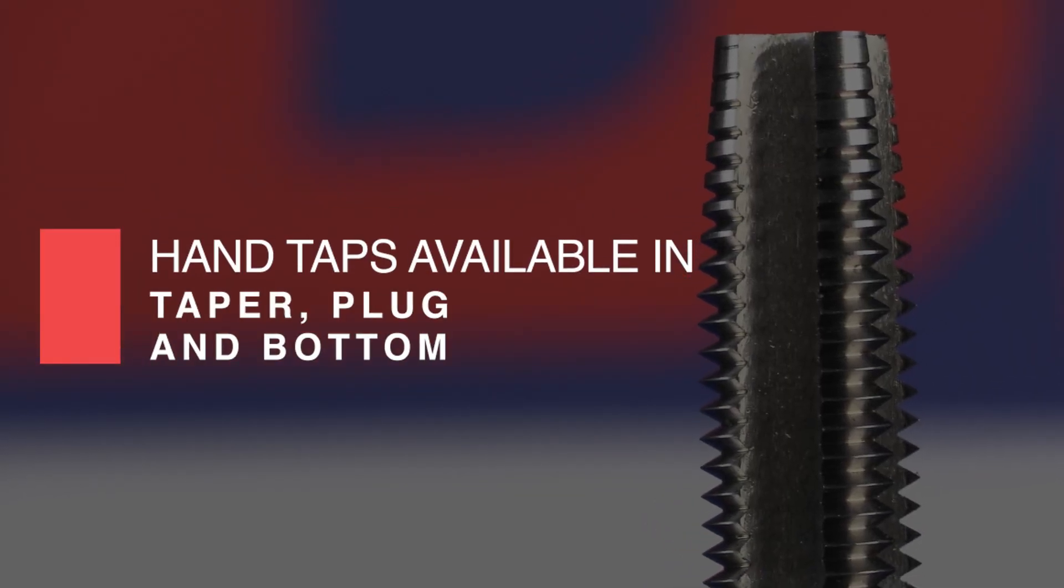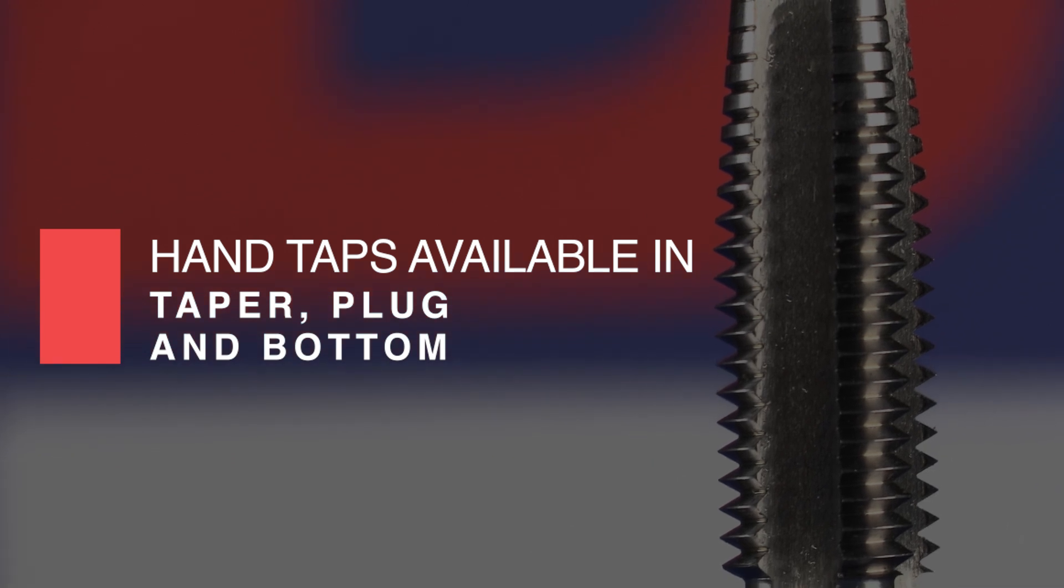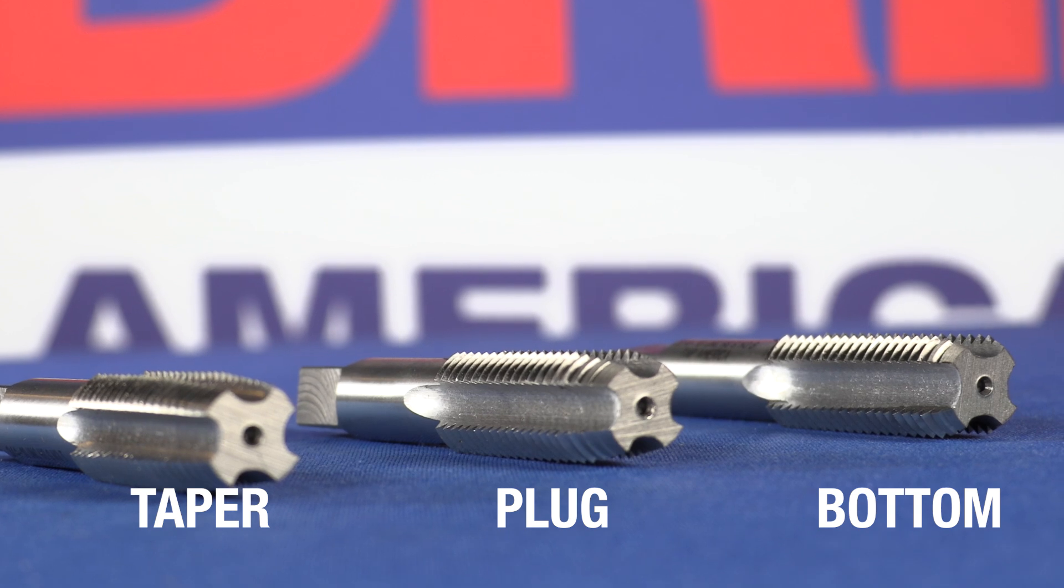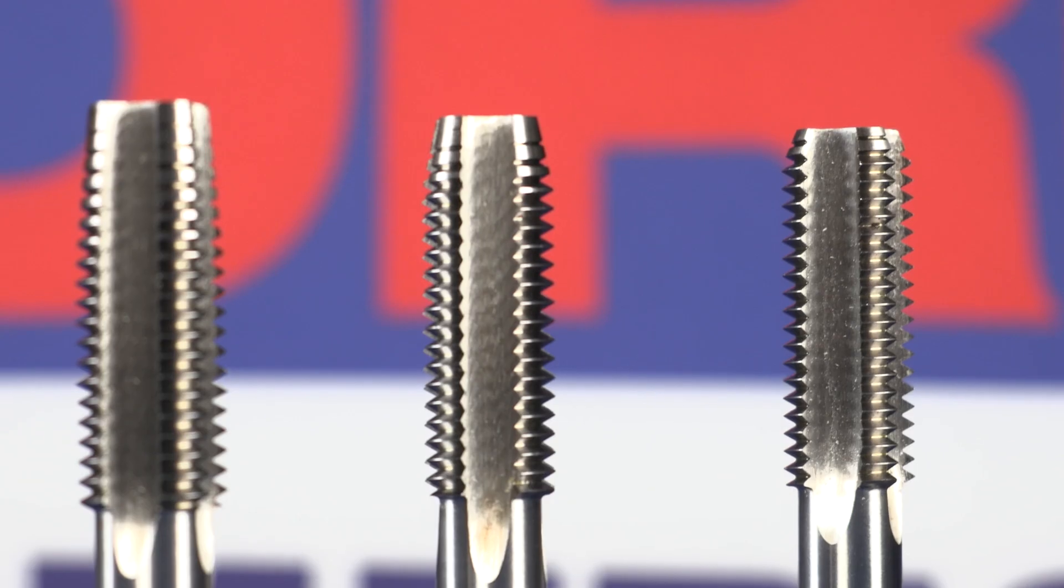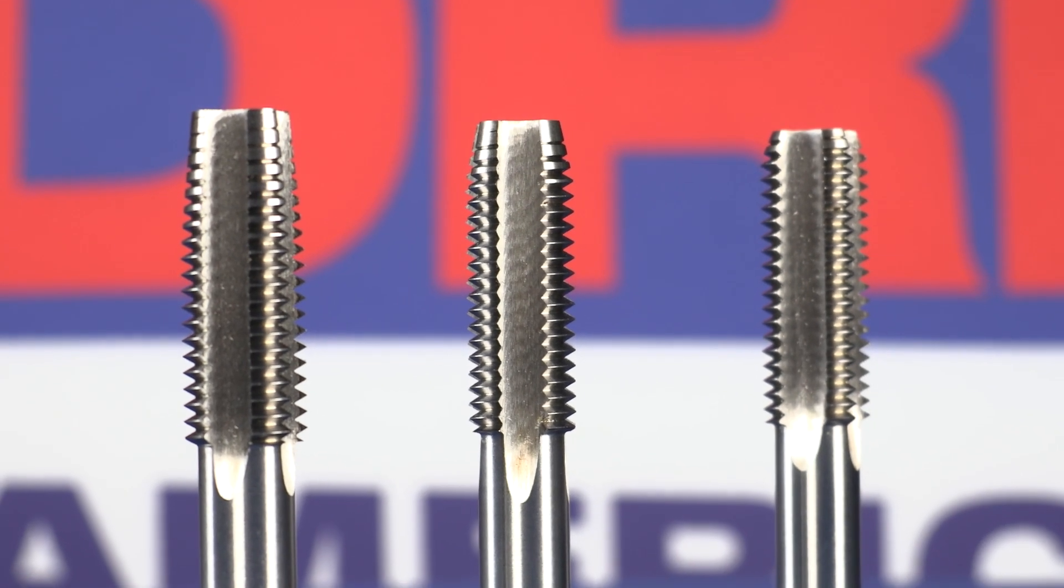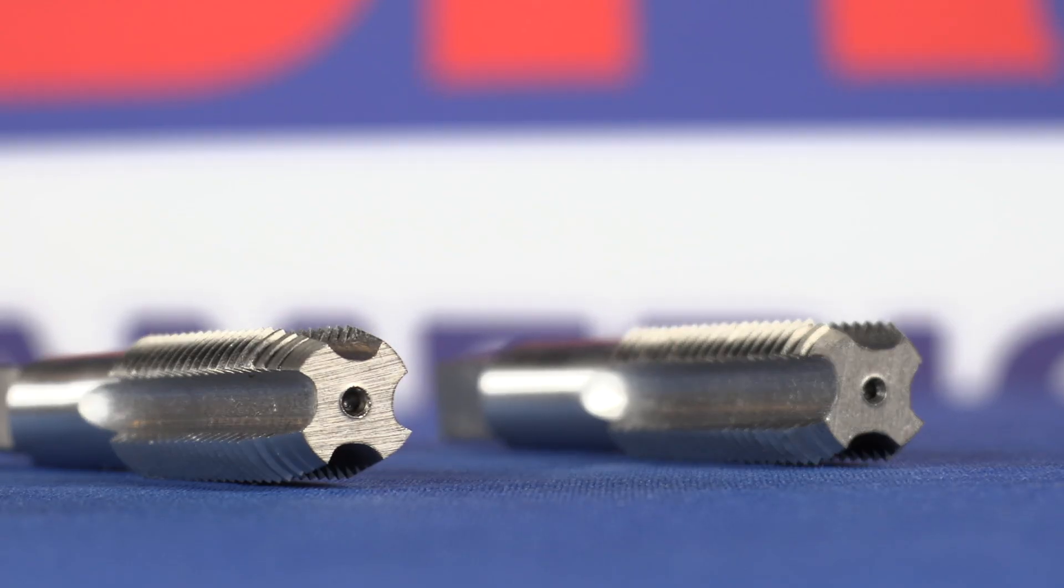The most commonly used Drill America Taps are hand taps, which come in three styles: taper, plug, and bottom. Taper taps start a thread square with the workpiece and have a pointed tip. Plug taps, the most commonly used taps, are generally used in through holes with a slightly less pointed tip.